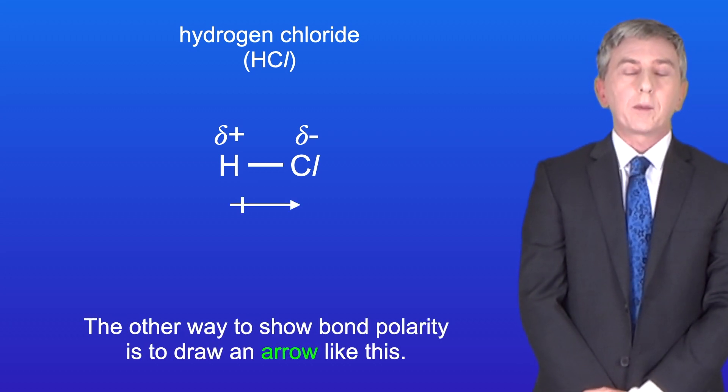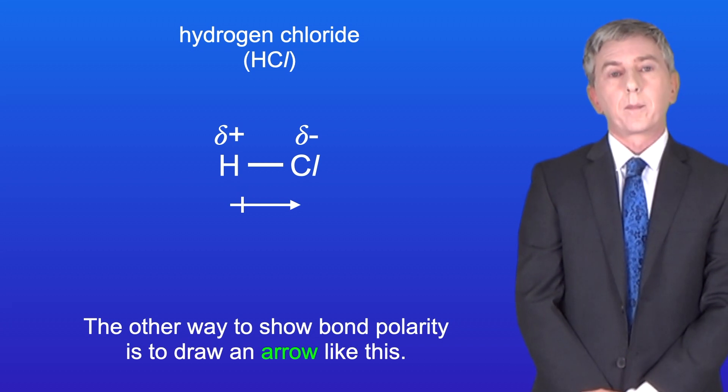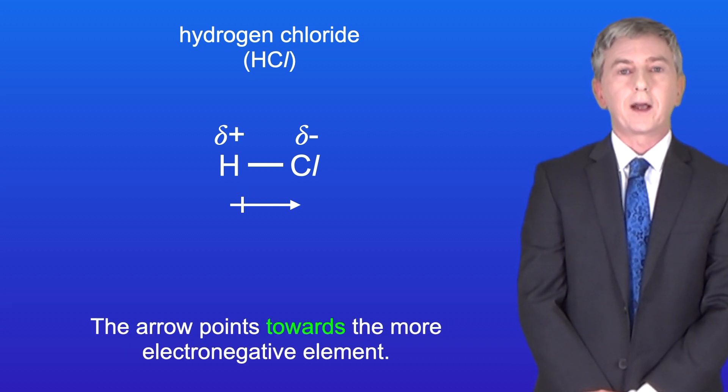The other way to show bond polarity is to draw an arrow like this, and the arrow points towards the more electronegative element.